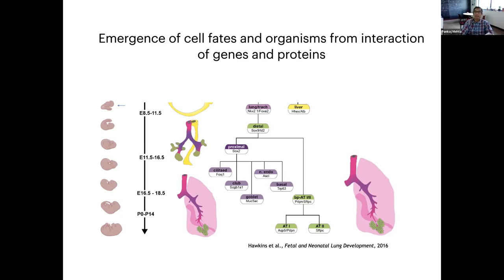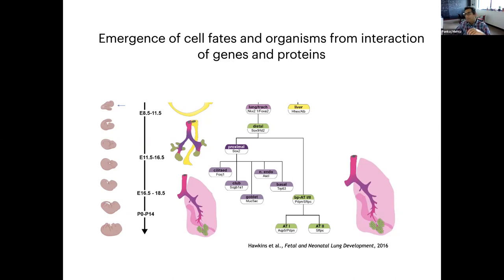What I want to point out is that it's a very complicated process. You start at day 8.5, 11.5, and the lung is basically developed through that stage. A mouse is born after 19 days, and then you have this post-birth day 0 and 14. What I'm really going to talk about are these very specialized cell types in the lung — it's a very complicated dynamical process.